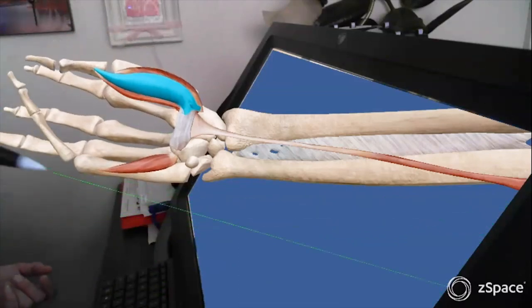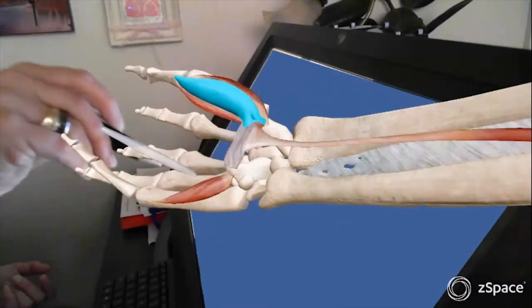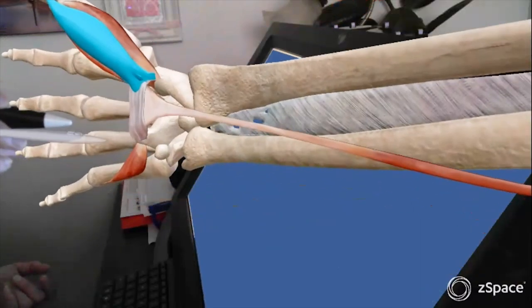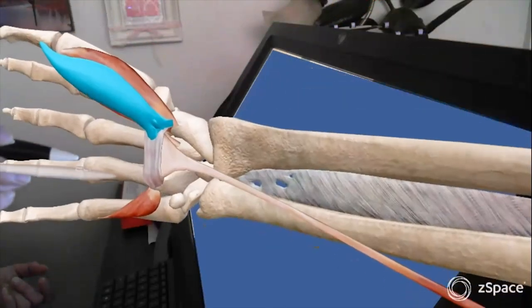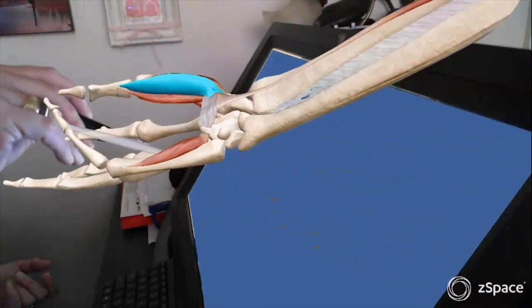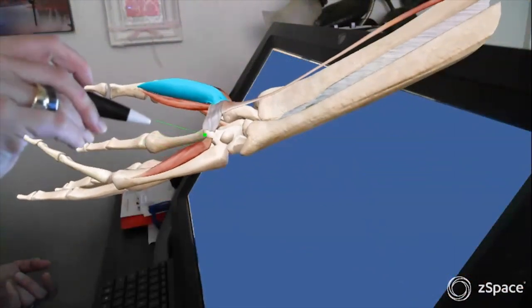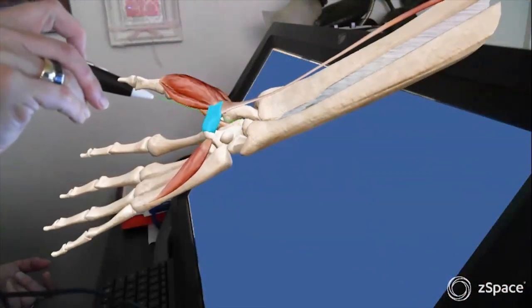In doing that deeper dive, I'm able to manipulate the model and move it around and really discuss why and how carpal tunnel can be affected within the wrist and hand. I have utilized the zSpace platform with Human Body Atlas application.